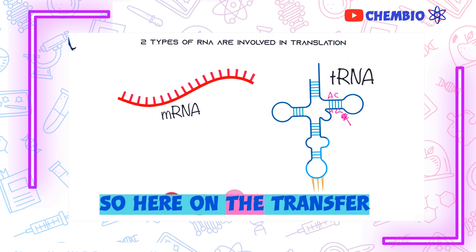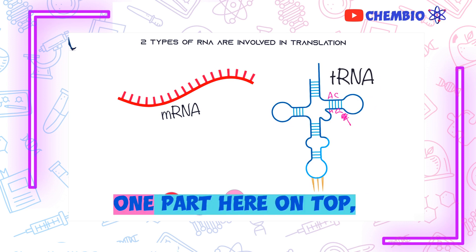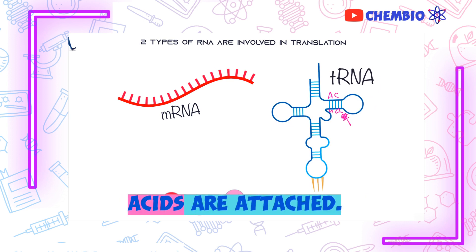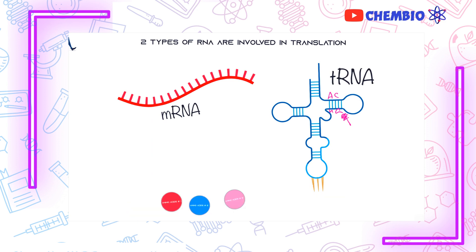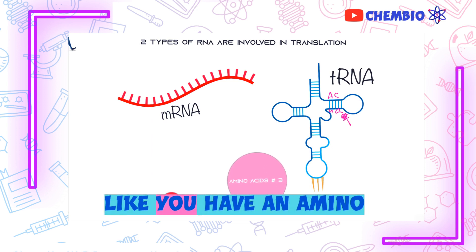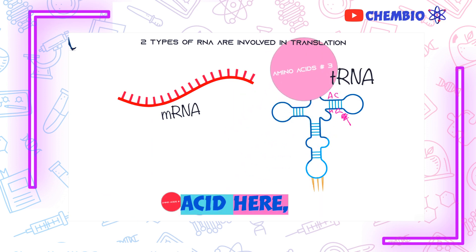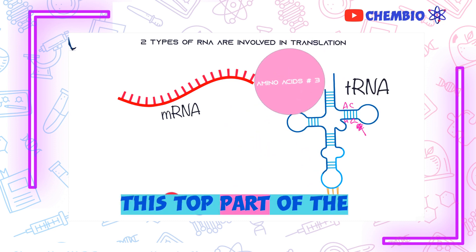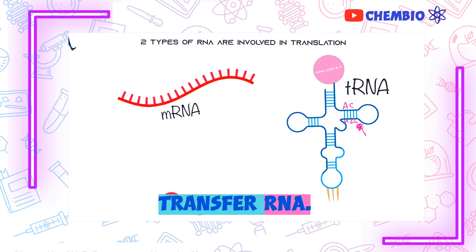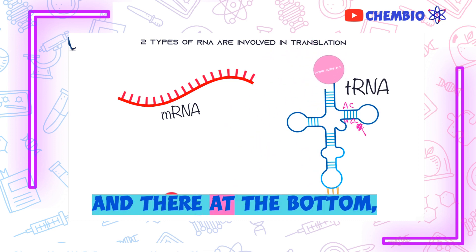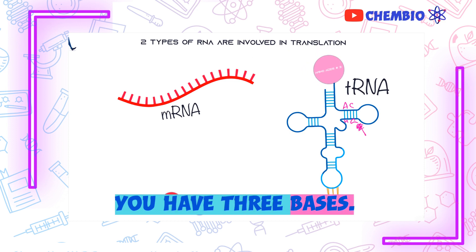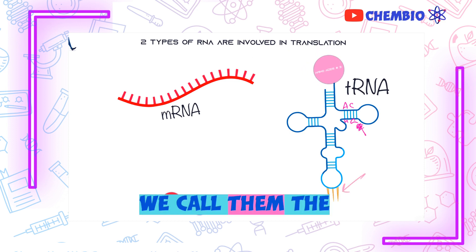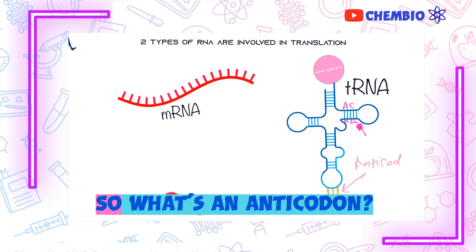On the transfer RNA, there are two important parts. One part at the top is where the amino acids are attached — the amino acid is always attached at this top part of the transfer RNA. And there at the bottom, you have three bases. Those three bases are very important.